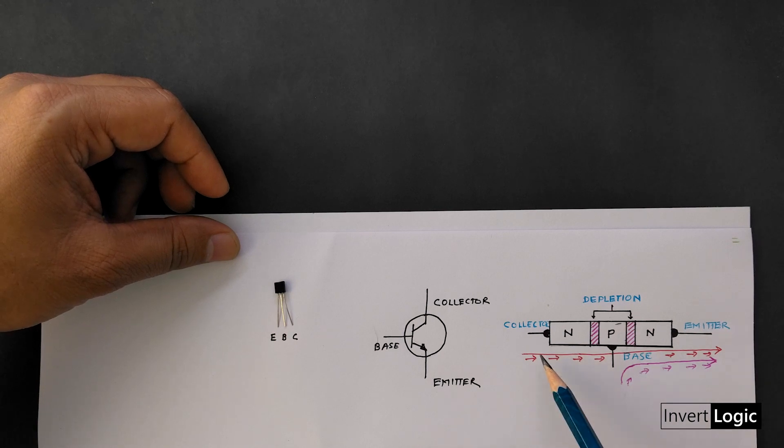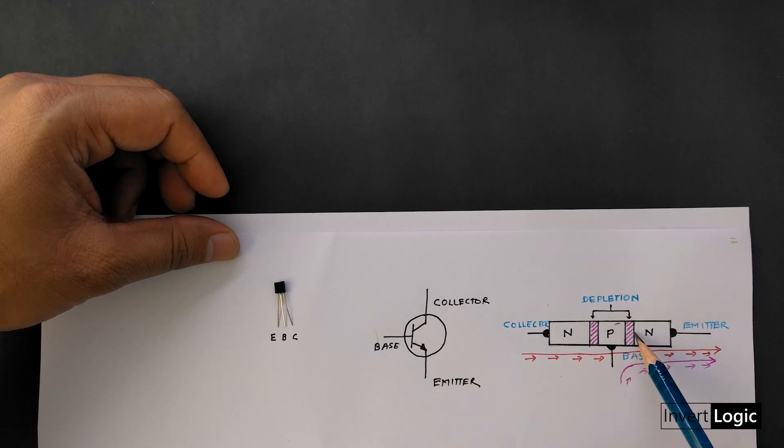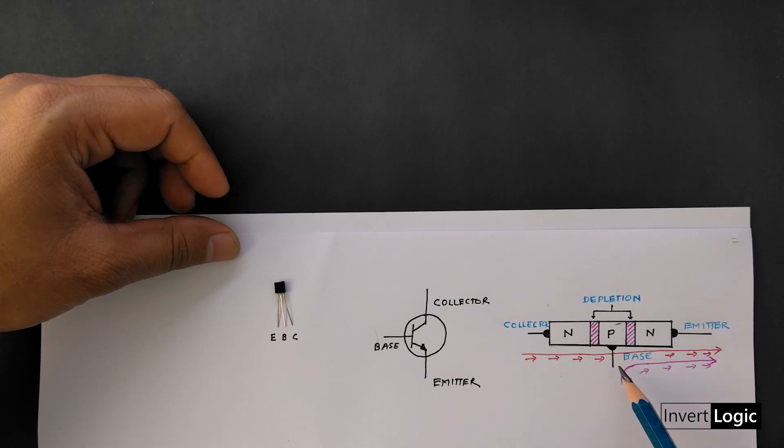So when the small amount of current starts to flow from base to emitter, a depletion region forms between the base and emitter. Electrons start to conduct and flow through the base to the emitter.